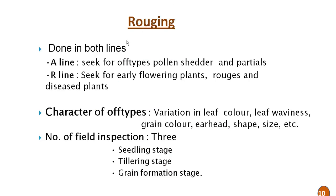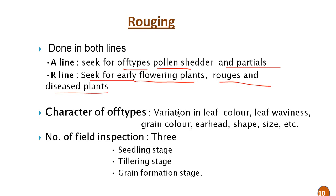Roguing is a very essential and crucial operation for hybrid seed production to maintain the genetic purity of the produced seed. Roguing is done in both lines, i.e., the A line and R line. For the A line, roguing seeks out off-types, pollen shedders and partials. For the R line, it seeks early flowering plants, rogue plants and diseased plants. Any plant having variation in leaf color, leaf hairiness, grain color, earhead shape or size different from the parent is treated as an off-type.